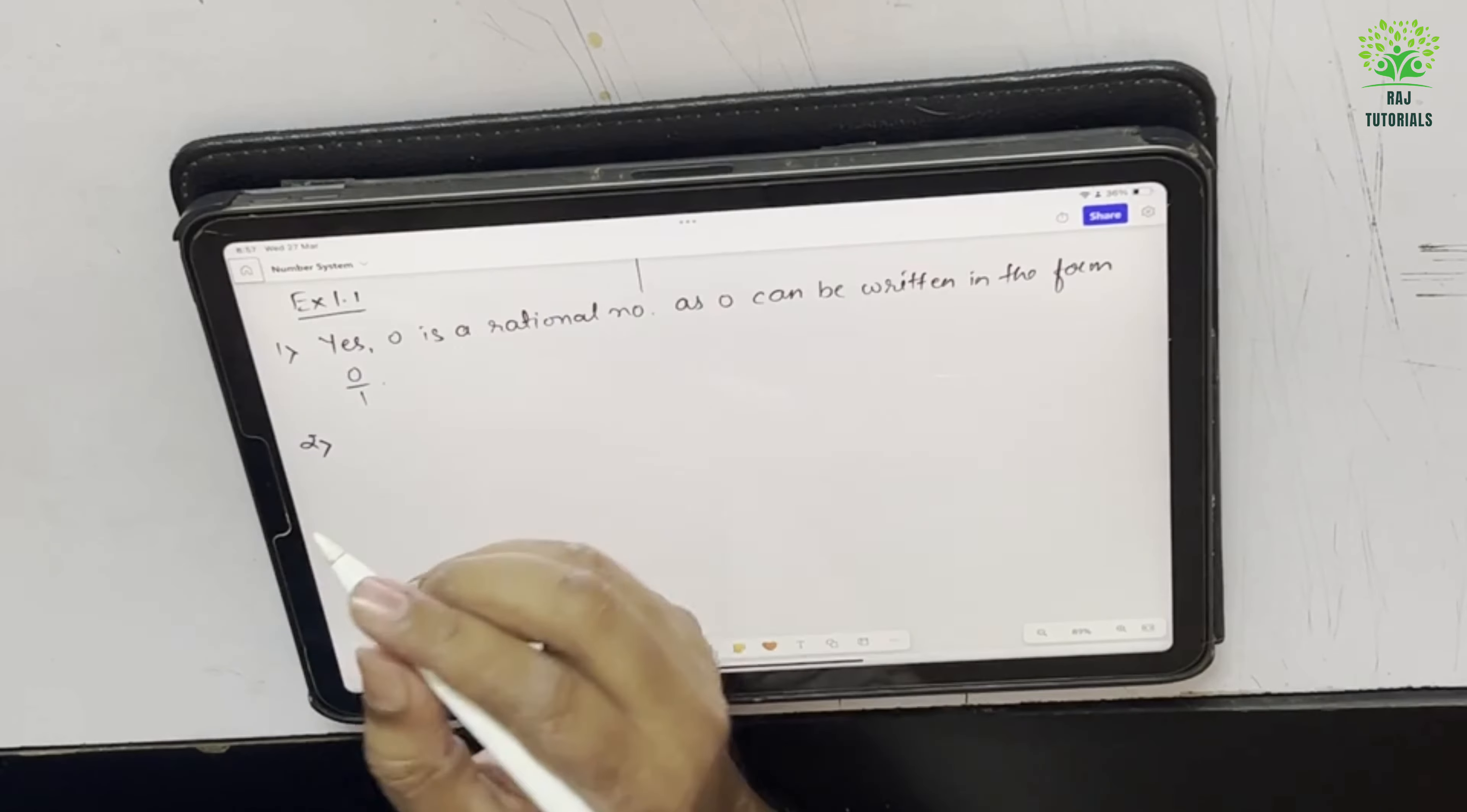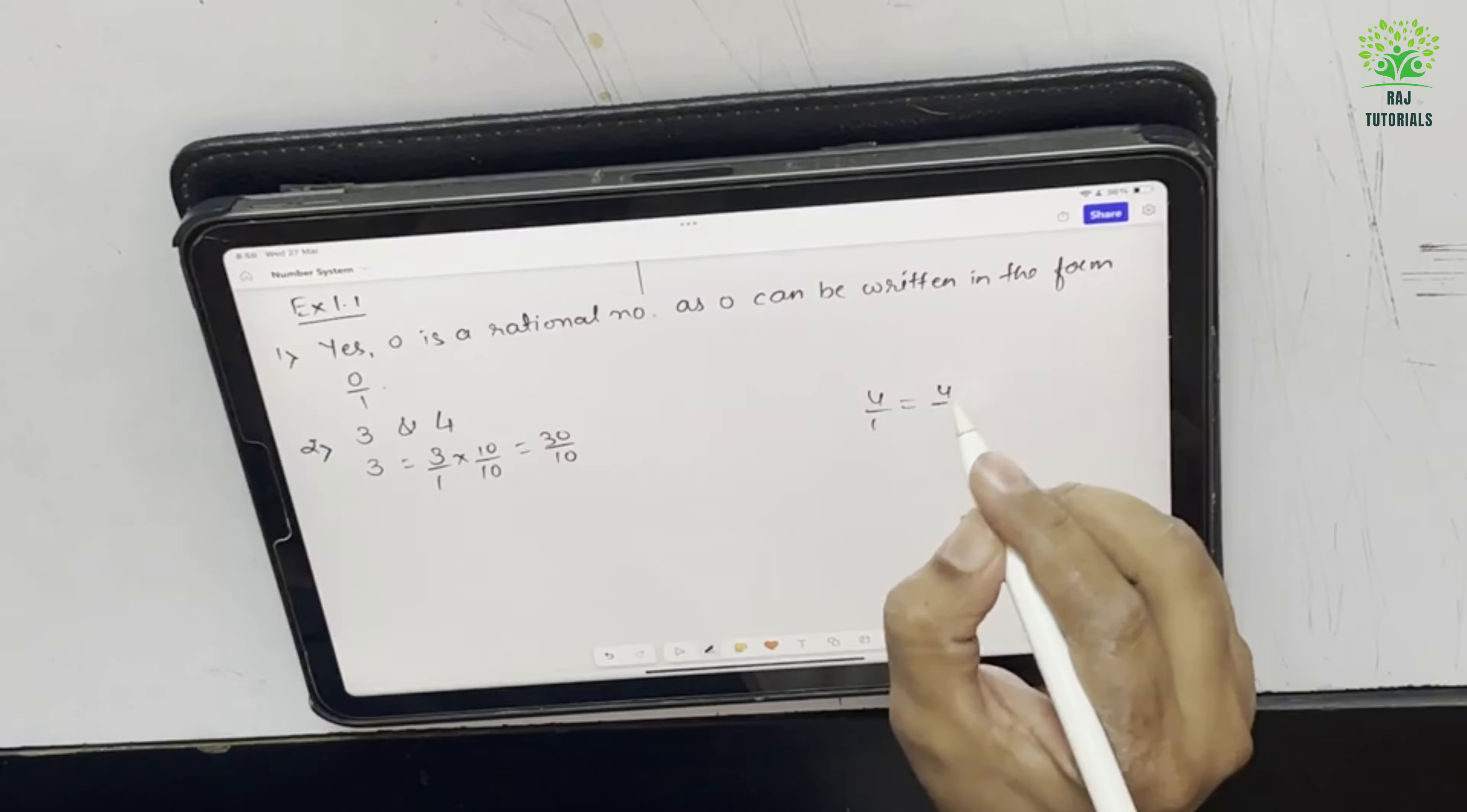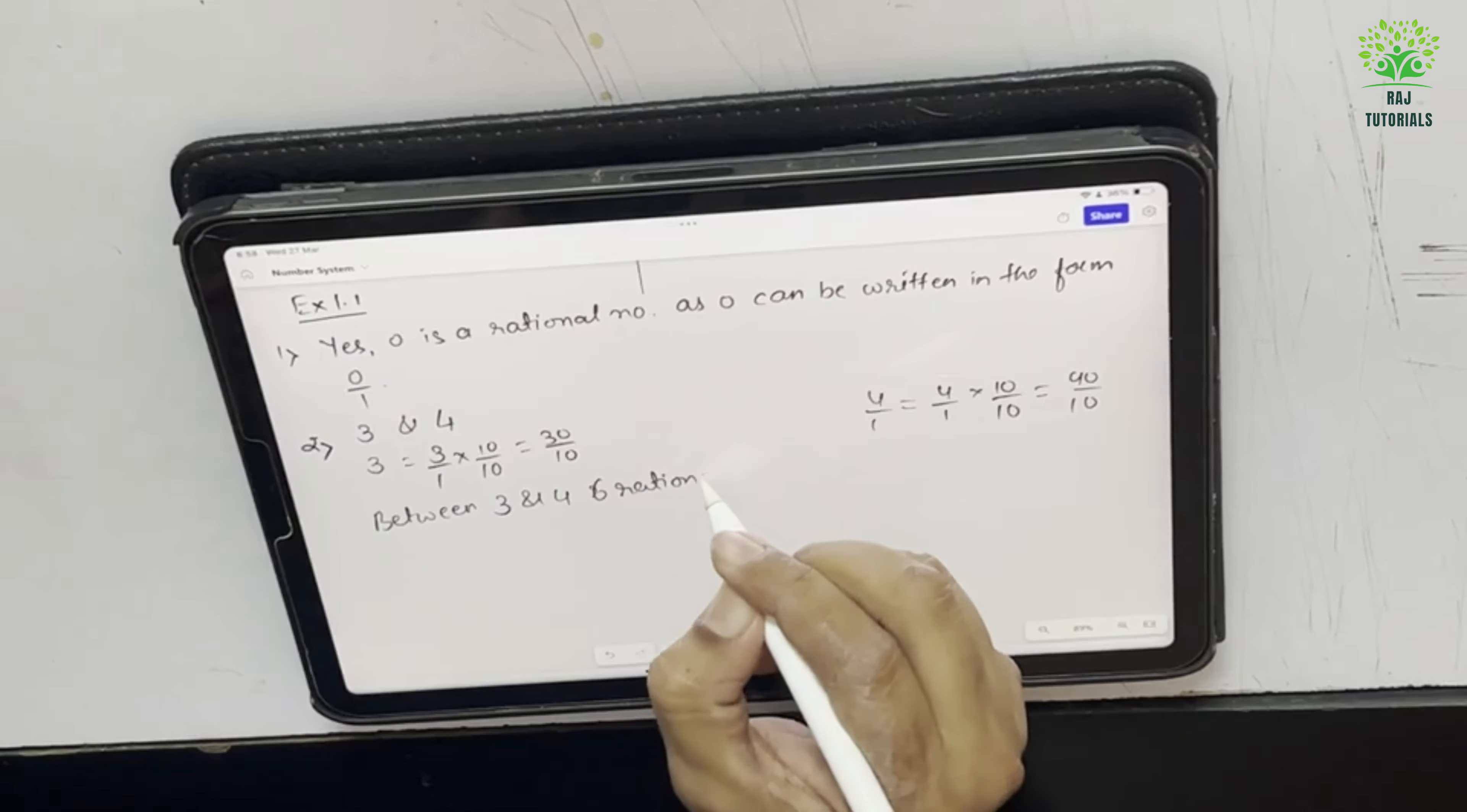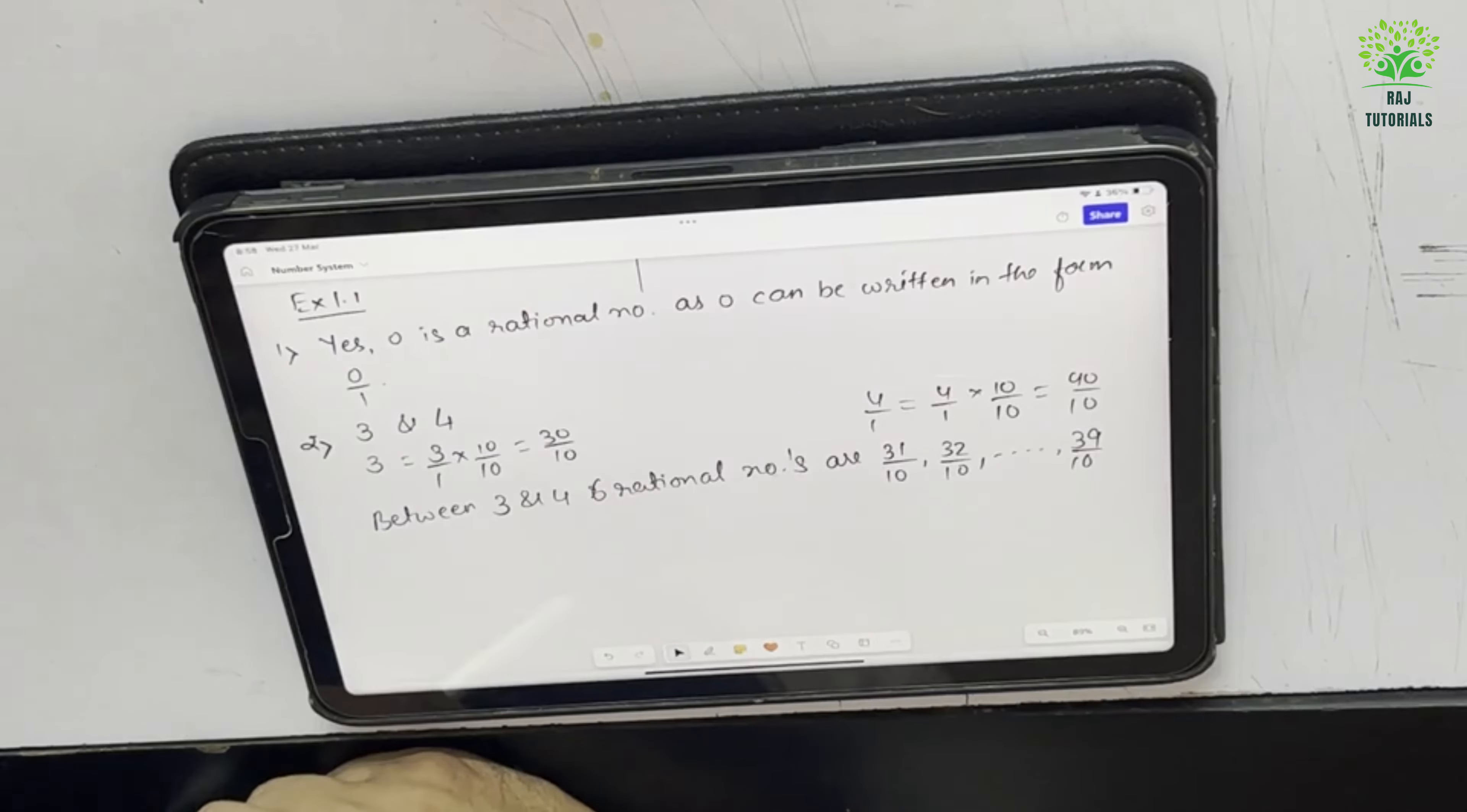Now question 2 it says find 6 rational numbers between 3 and 4. So 6 rational numbers is asking, so can I say 3 equal to 3 by 1 into 10 by 10, that will be 30 upon 10 and 4 by 1 equal to 4 upon 1 into 10 by 10, that will be 40 upon 10. So now between 3 and 4, 6 rational numbers are 31 upon 10, 32 upon 10, like that I have to go on till 39 upon 10. So any 6 rational numbers I can show or whether I can use this method also or the one which we did in the example, that method also I can use.